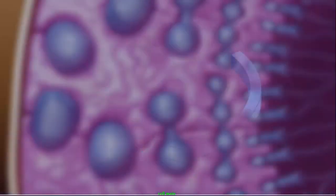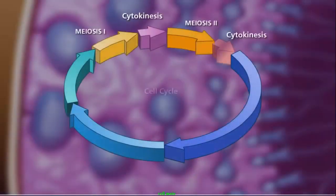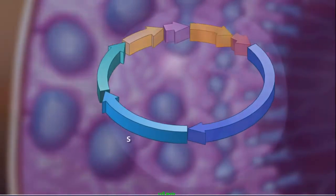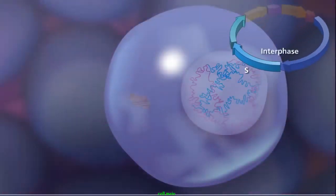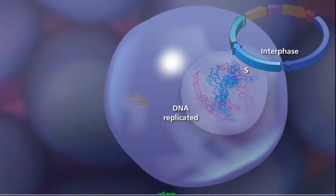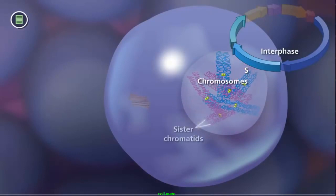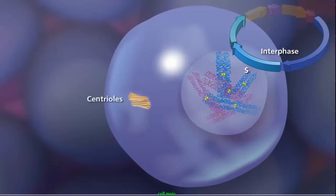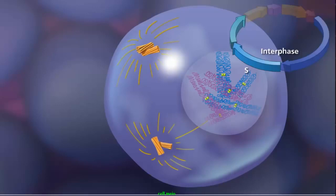As in mitosis, meiosis begins after a cell has successfully completed the G1, S, and G2 stages of interphase. During the S phase of interphase, the DNA is replicated, producing two copies of each chromosome called sister chromatids. The paired centrioles in the cytoplasm duplicate and begin extending microtubules that will form the meiotic spindle.